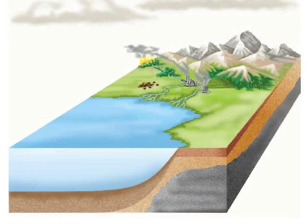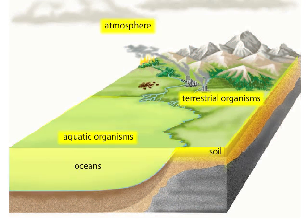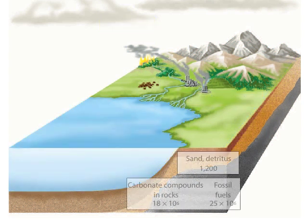In the global carbon cycle, carbon is cycled through Earth's organisms, the soil, the atmosphere, and the oceans. Most of Earth's carbon is found in fossil fuels and in carbon-containing minerals and rocks.